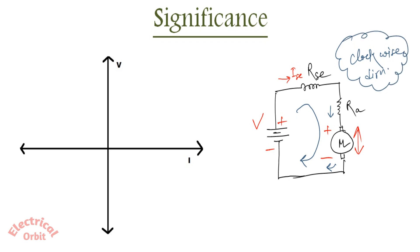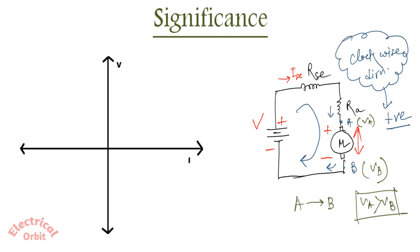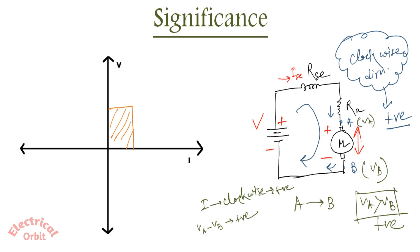The clockwise direction of current flow will be considered as positive. So whenever we have this polarity of the motor — suppose we give the name of this terminal as A and this is B — the voltage across A is V_A and across B is V_B. If current is passing from A to B and V_A is greater than V_B, this is considered as positive polarity. So when I is clockwise it is positive, and V_A minus V_B is positive, so our motor is operating at the first quadrant, where the value of V is positive and the value of I is also positive.